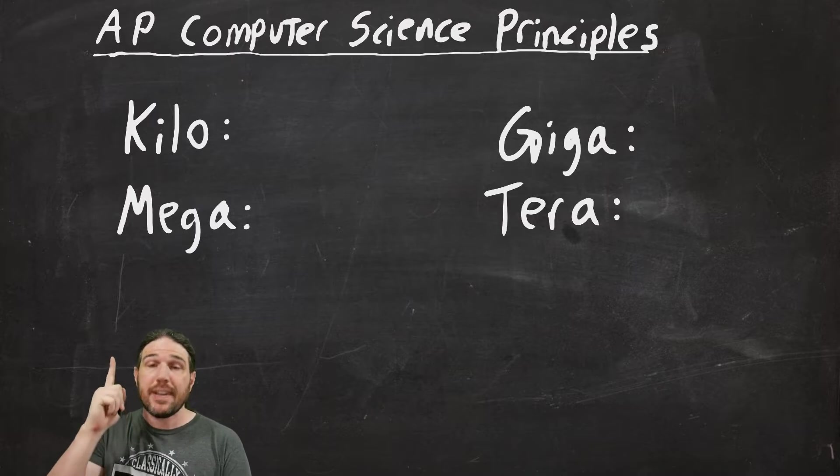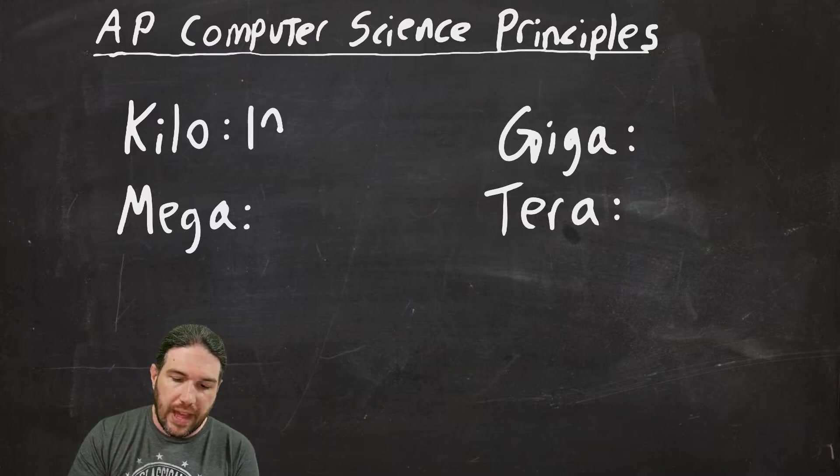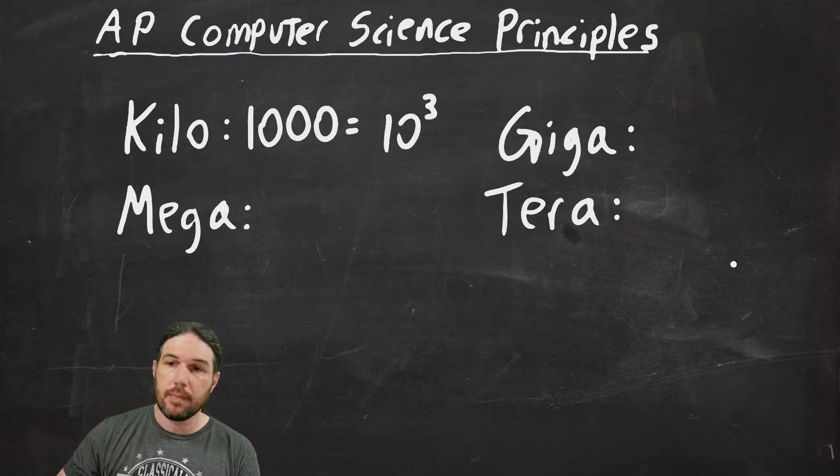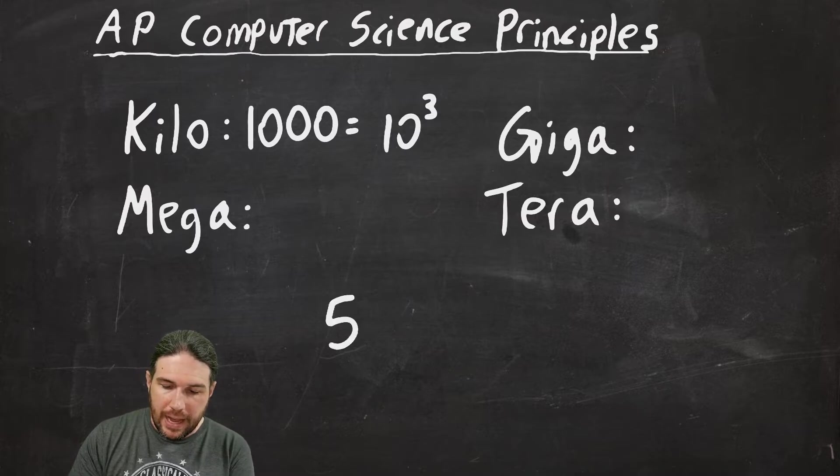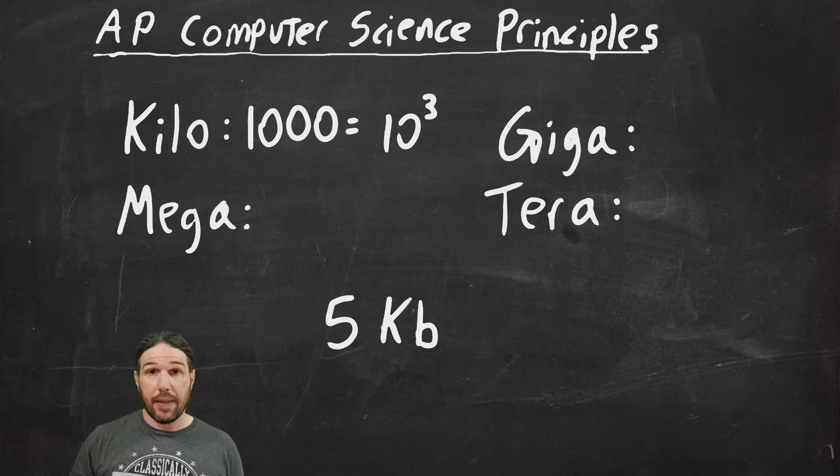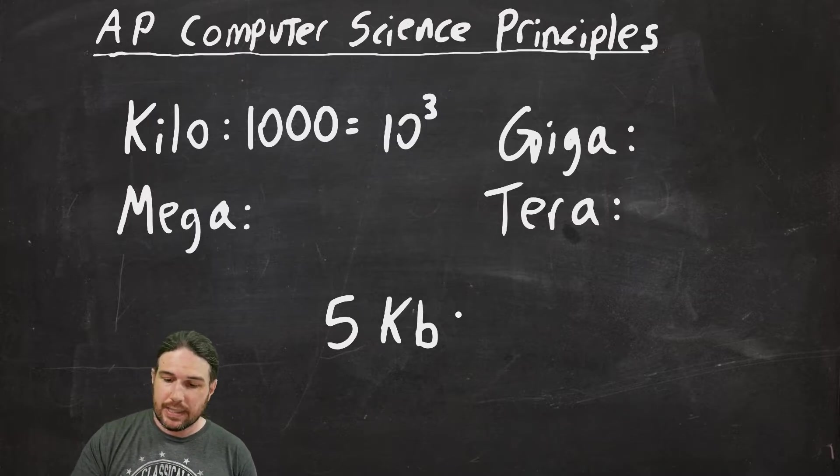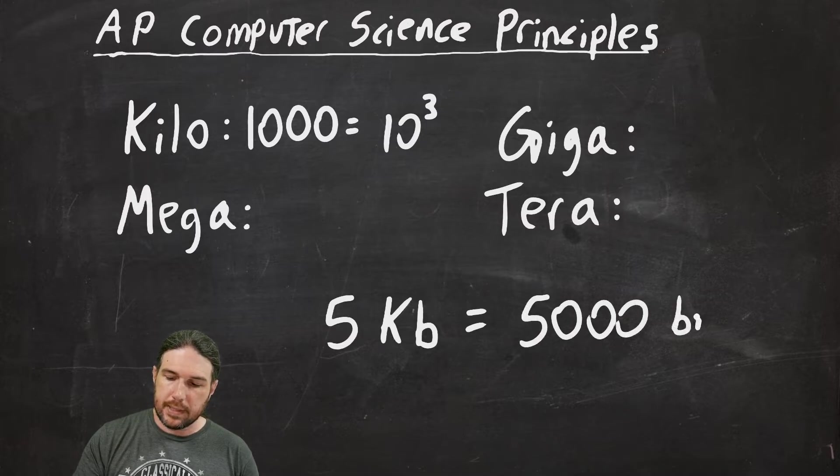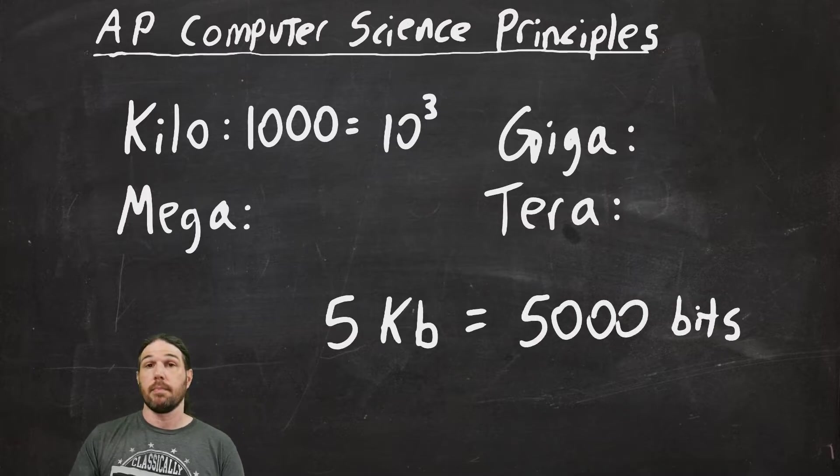Now, in metric, the prefix kilo means one thousand, which is the same thing as saying ten to the third. In other words, if I say I have five kilobits, that is five thousand bits.